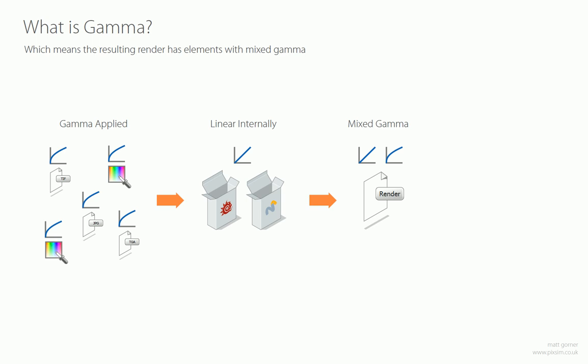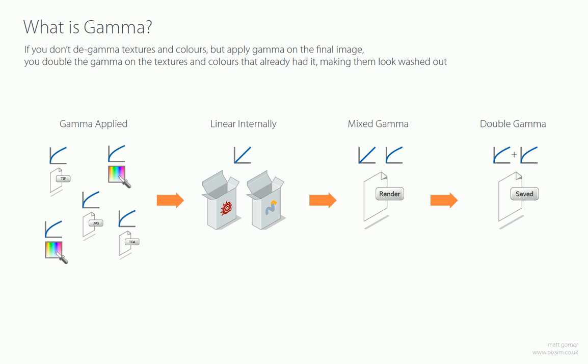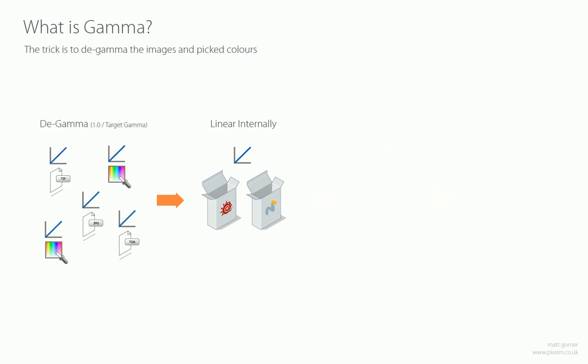You end up with this sort of mismatch of gamma in your final rendering. The other issue is that if you don't de-gamma the colours and textures but apply gamma on the final image — because you've heard about gamma correction and you apply it at the end — then all these images that had gamma applied already get double-gamma'd, and that's why they look washed out, as we'll see in the images at the end. So to combat this, the obvious thing to do is to de-gamma all these inputs — all these images and picked colours — which is actually quite easy to do.